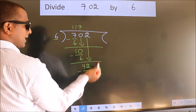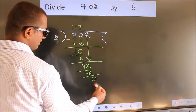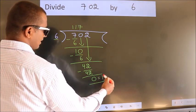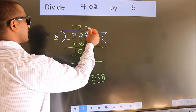No more numbers to bring it down. So we stop here. This is our remainder. This is our quotient.